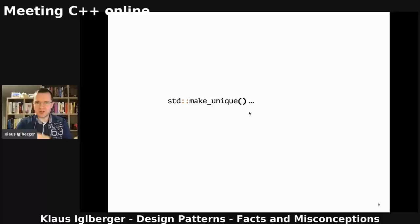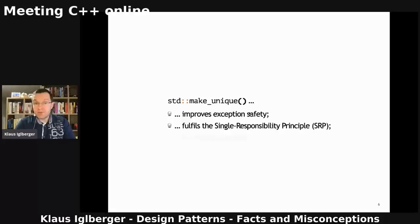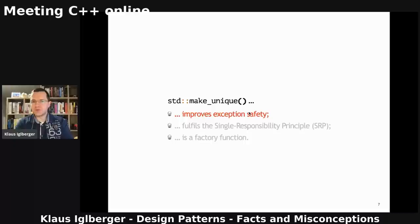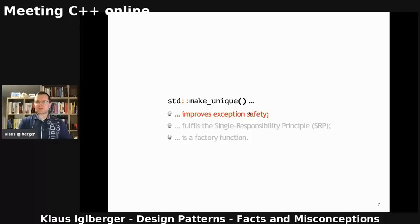In the past couple of years, I've heard so many statements about make_unique that I feel it's necessary to talk about them. I've heard that make_unique improves exception safety; I've heard that the make_unique function fulfills the single responsibility principle; and I've also heard that make_unique is a factory function. The first statement — make_unique improves exception safety — is absolutely true. It's like an atomic operation: you immediately create a unique pointer, the resource is immediately coupled to it. It's one operation only. This is definitely true.